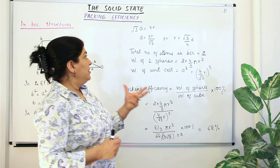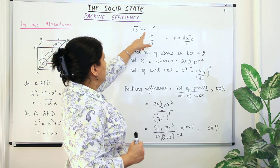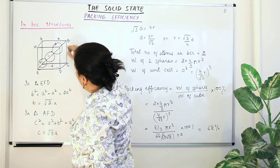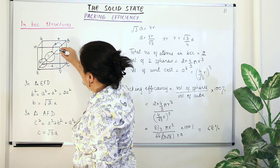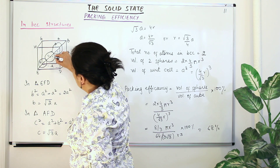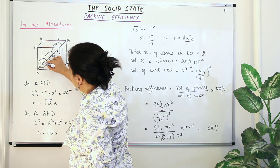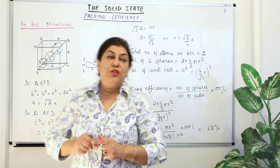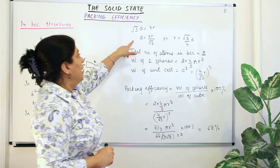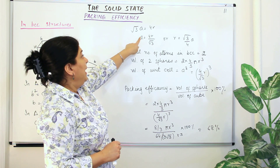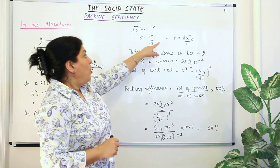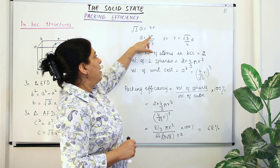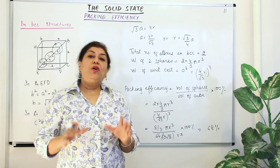The body diagonal C equals four radii: one corner sphere contributes one radius, the center sphere contributes two radii (one on each side), and the far corner sphere contributes one radius — giving 4R total. Therefore √3·A = 4R, so A = 4R/√3, or equivalently R = (√3·A)/4.